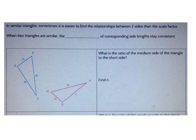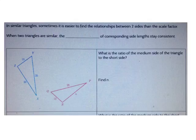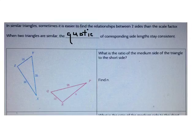Now let's dive into today's lesson. When you're solving for similar triangles, sometimes it's easier to find the relationships between two sides than the scale factor. When two triangles are similar, the quotients of corresponding side lengths stay consistent. Let's use this to complete a few examples.